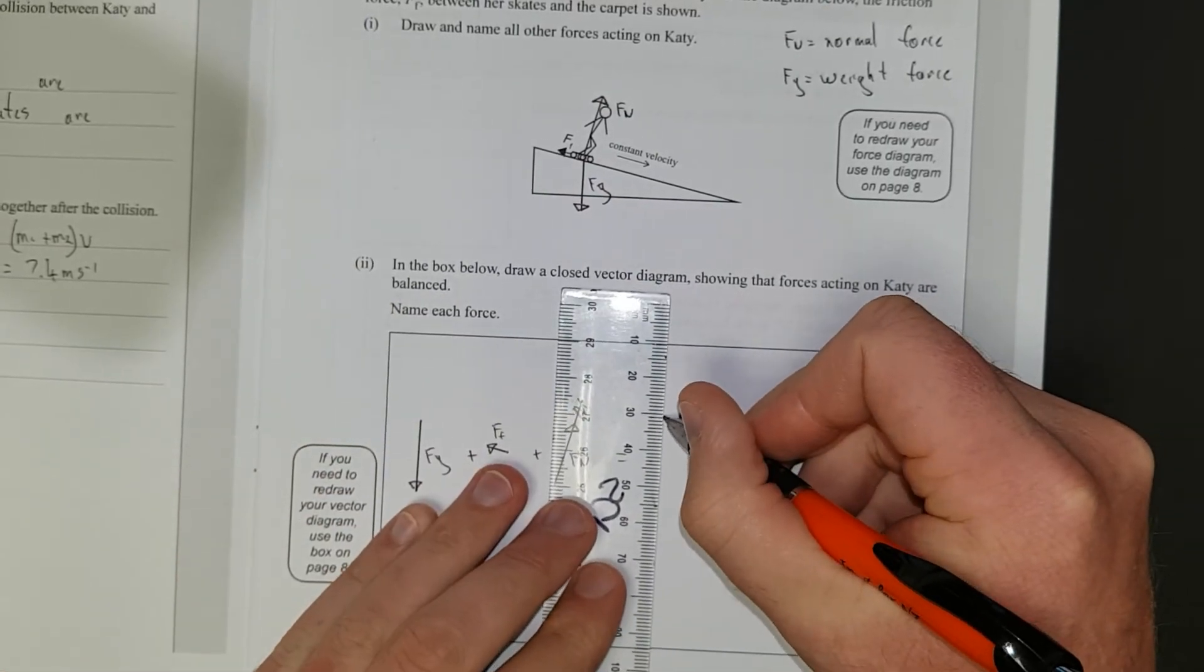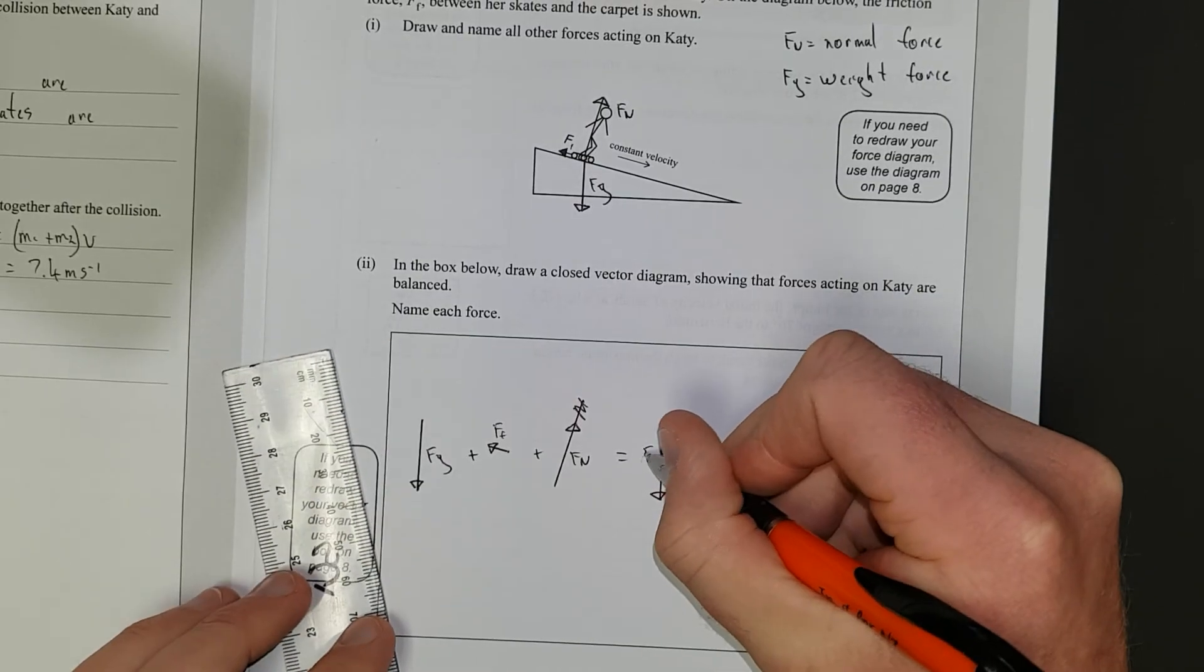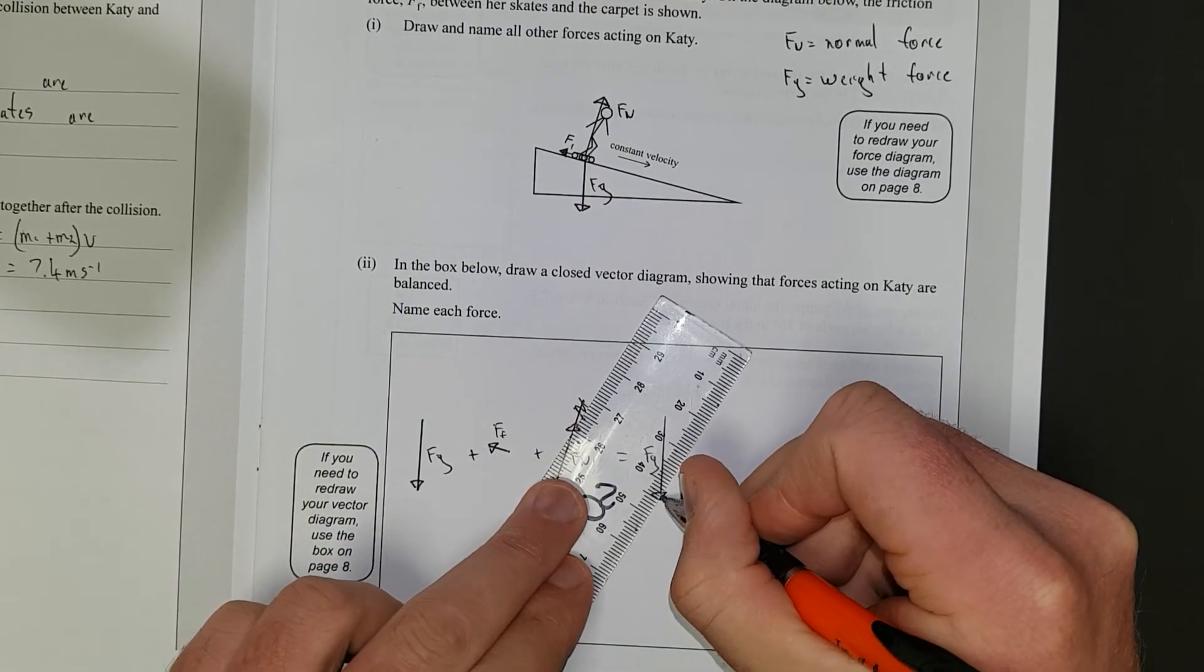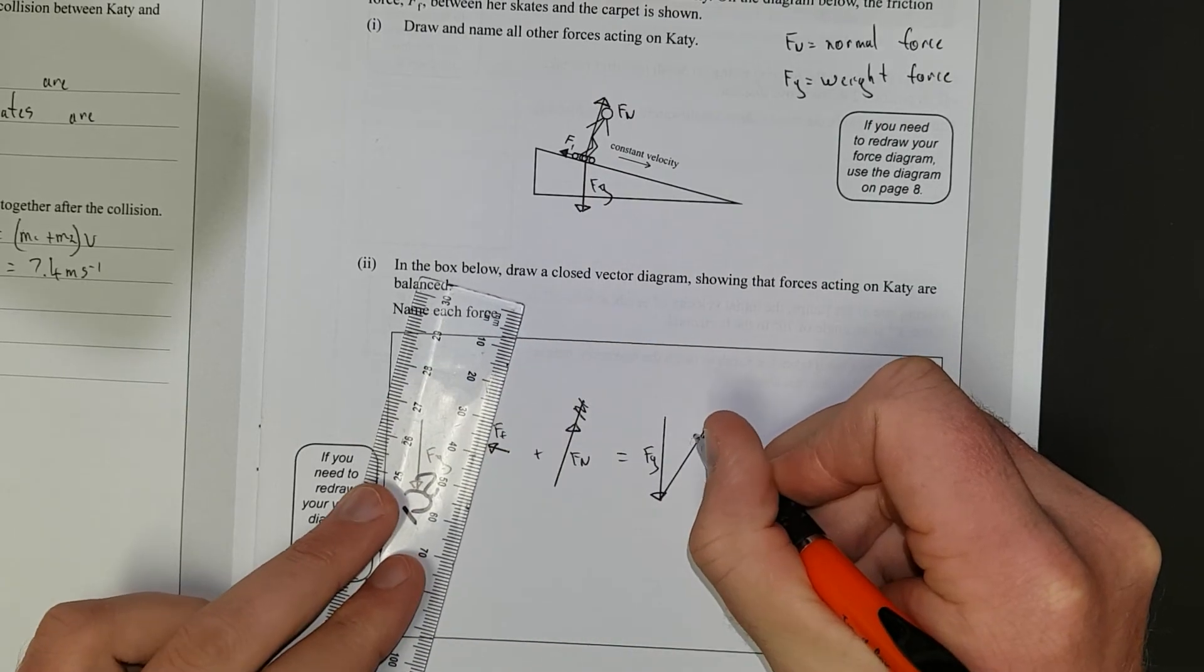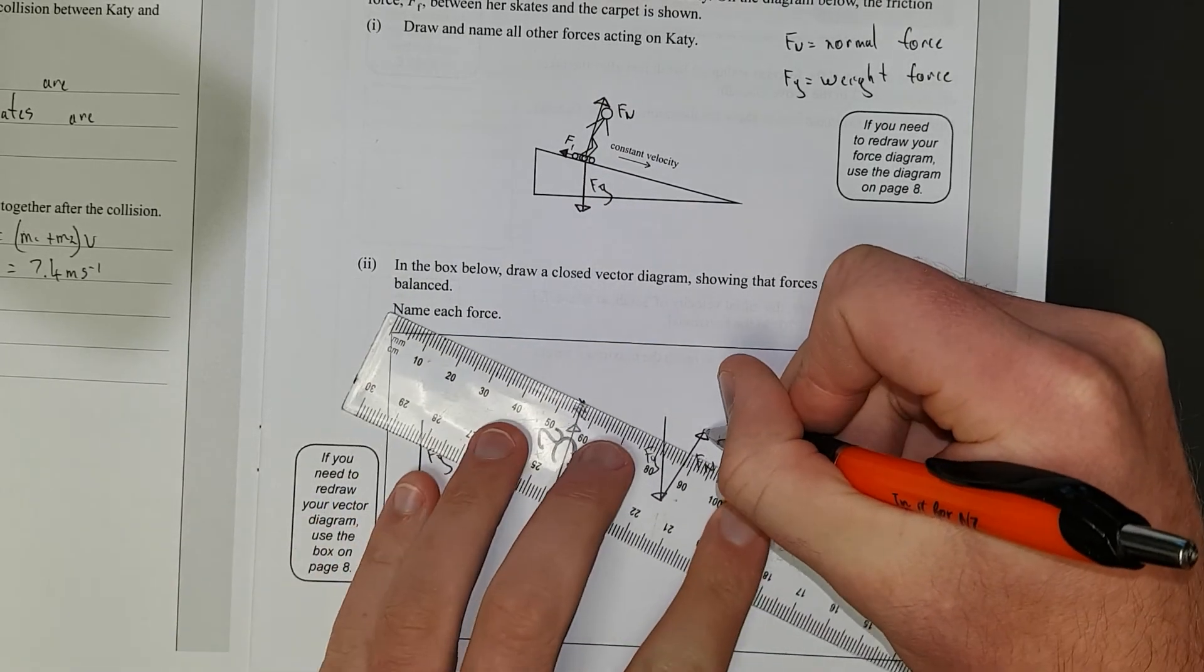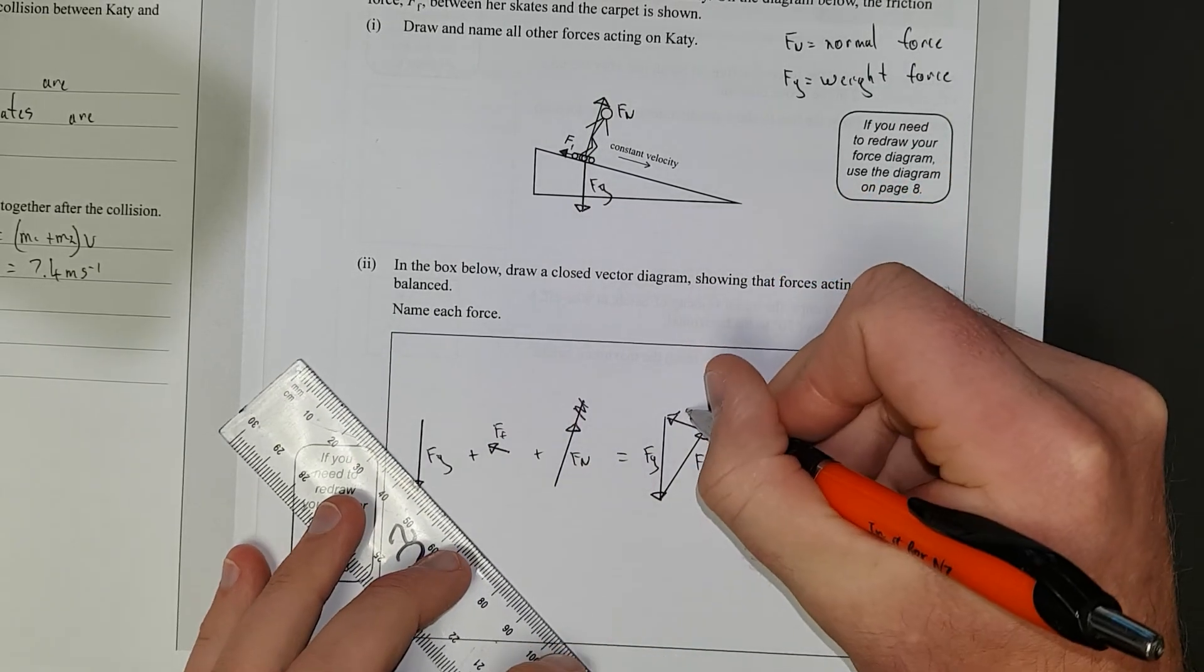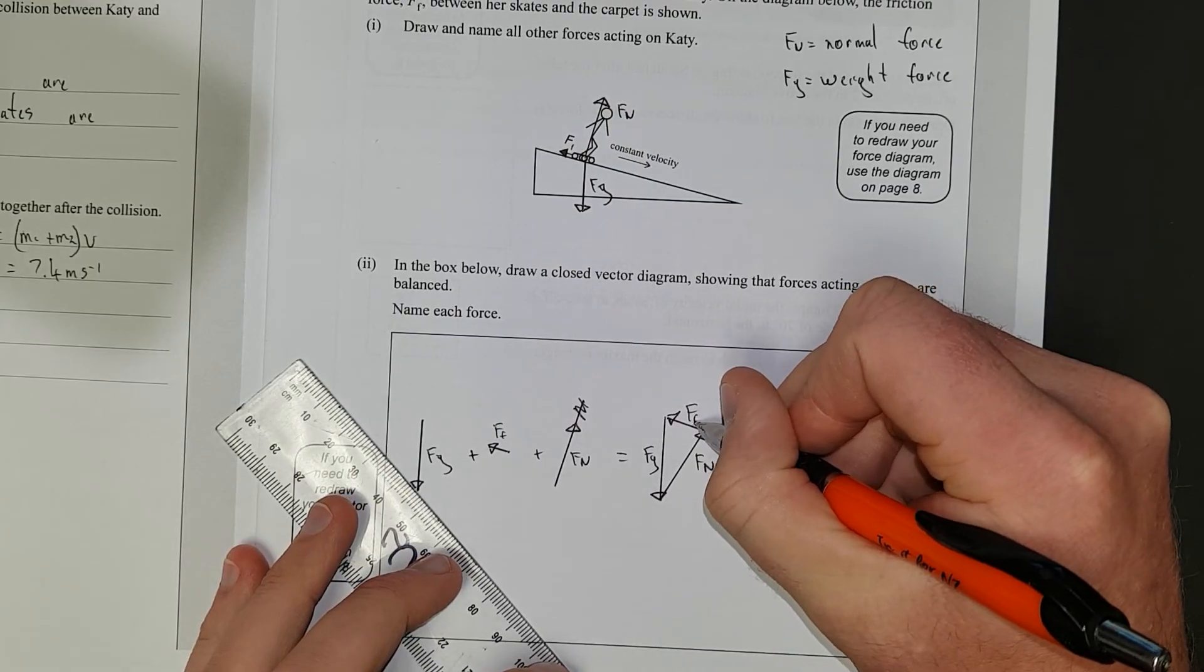So, now, what we do is we go down, down FG, not exactly to scale, but whatever. We're going to go up, FN, FN, and then we're going to go back to the start. Ooh, that's horrendously off. If friction.